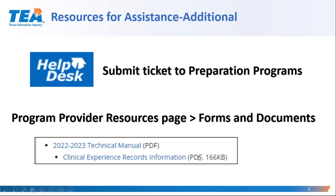These are some additional resources you may use as you learn the functionality of the new screens in ECOS. You may submit a help desk ticket and attach any upload files or screenshots that may be needed for TEA staff to support you. Additionally, you may want to consult the technical manual, which will be updated and posted concurrent with the go-live date of the clinical experience records pages in ECOS. Published below the technical manual on the program provider resources page is information about clinical experience records and links to some templates which are helpful for creating CSV upload files.